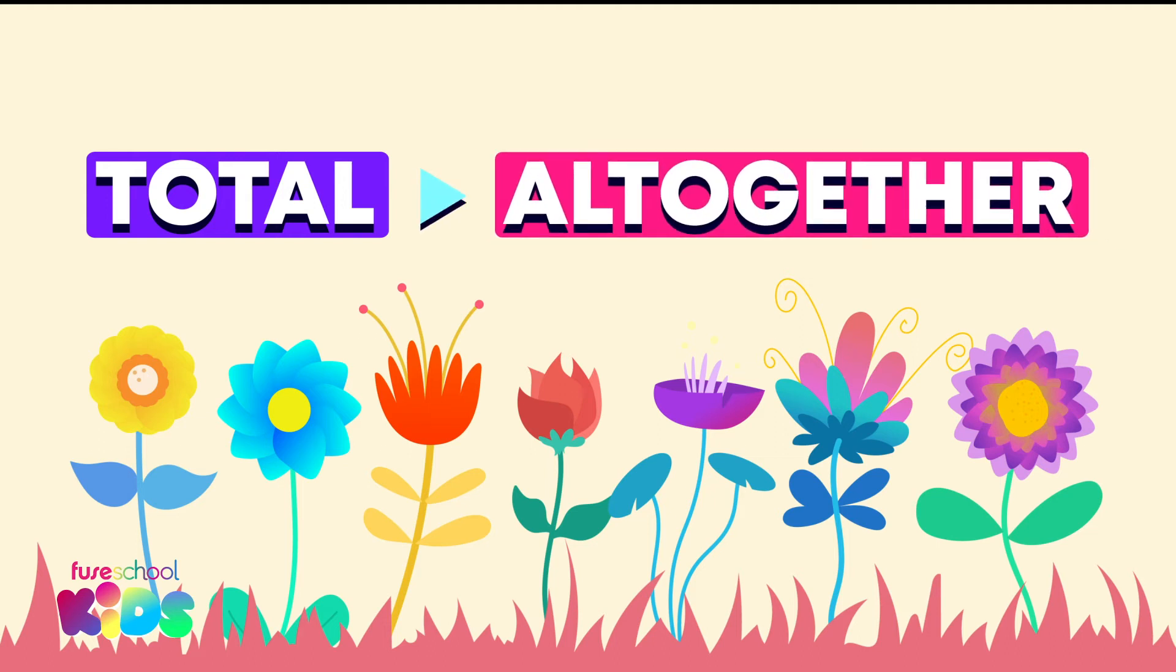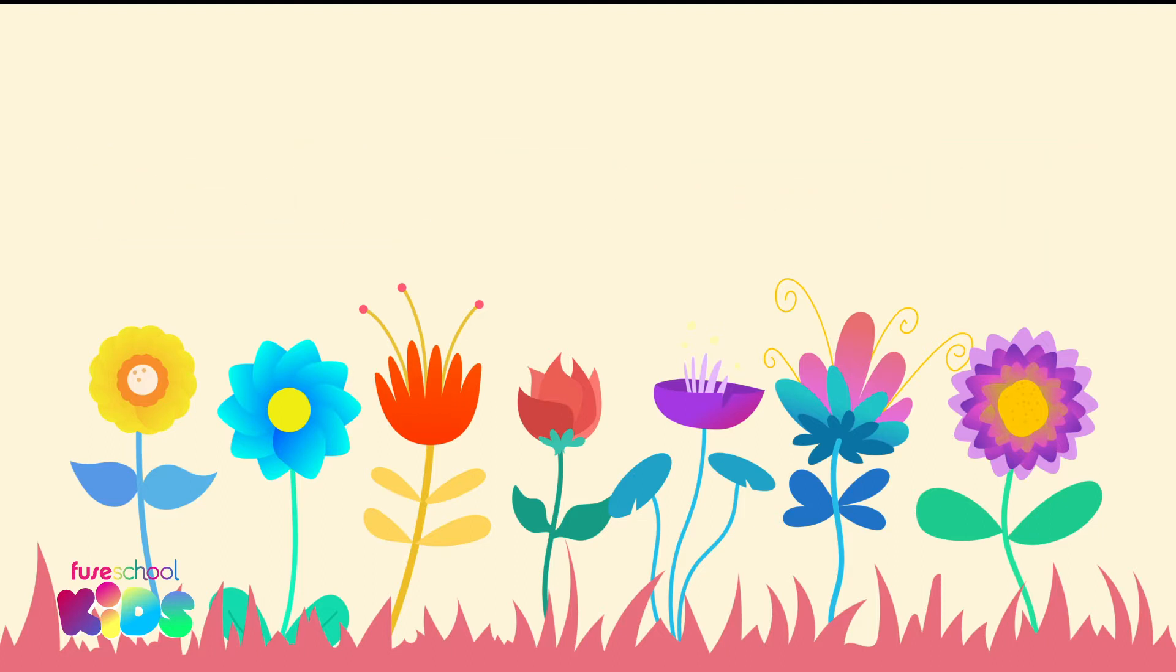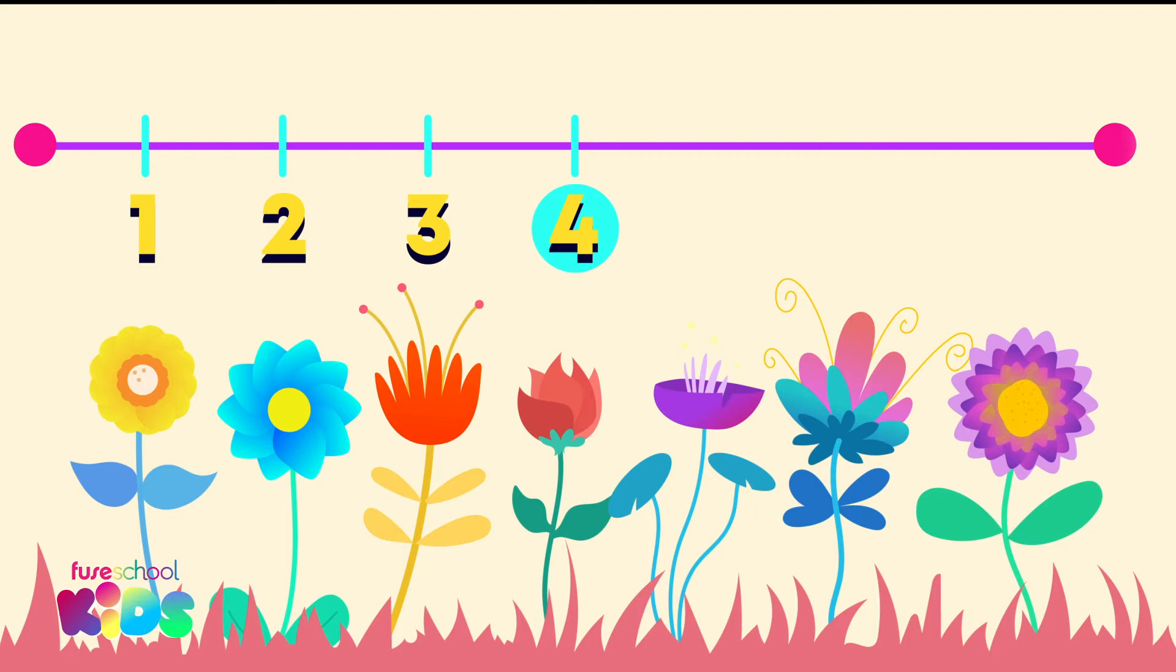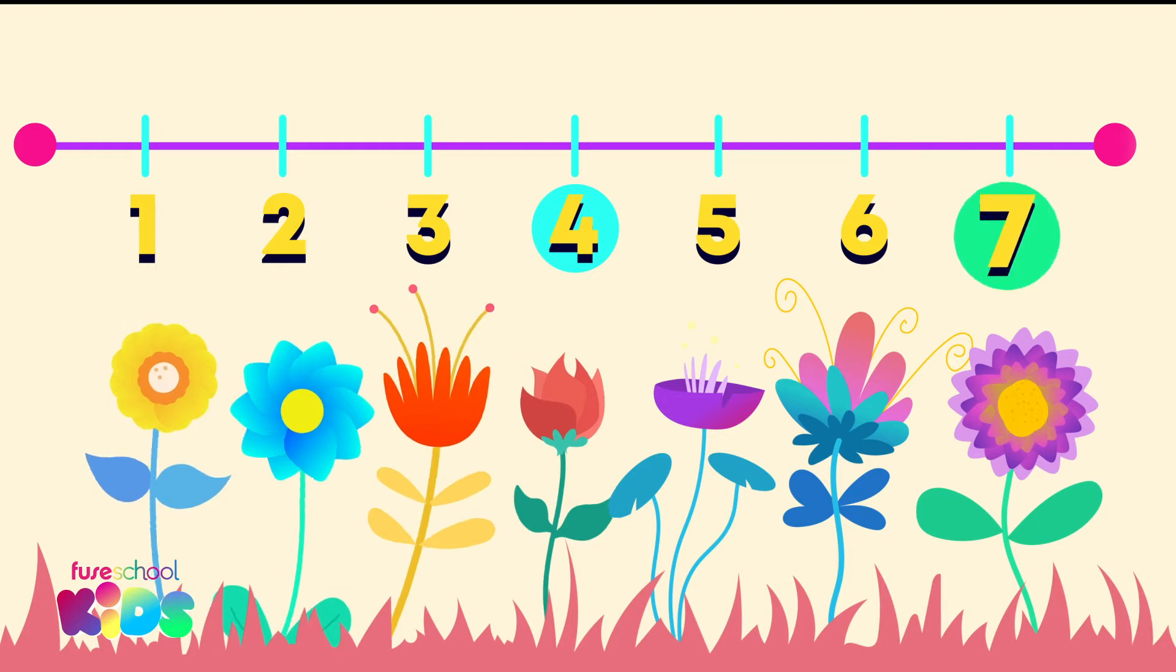To find out how many there are in total, we need to count on from four. When we count on, we start with the number that comes after the number we have. Let's try it together. We have four. Count on with me. Five, six, seven. There are seven flowers in total.